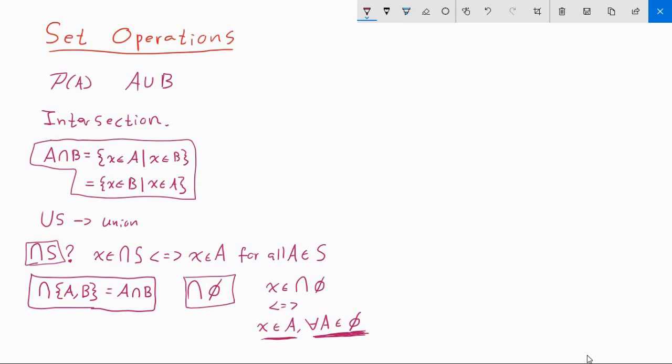So therefore, this set, the intersection of the empty set, would have to be the set of all sets. And we've already seen that our axiom schema of comprehension rules this out from happening. So we definitely don't want to have our definition encompass the case of the empty set.